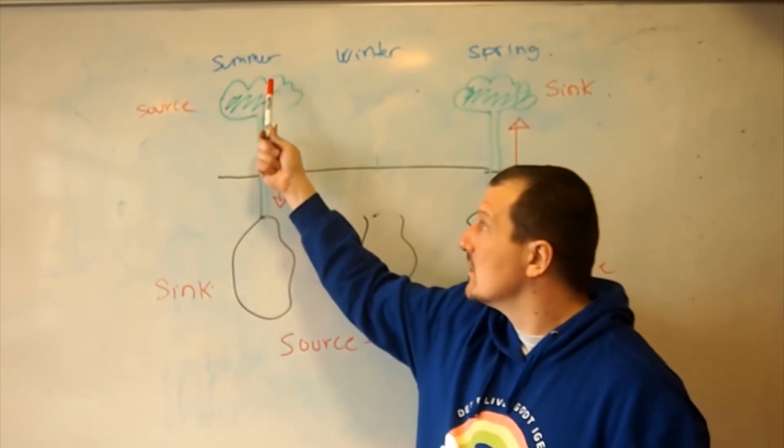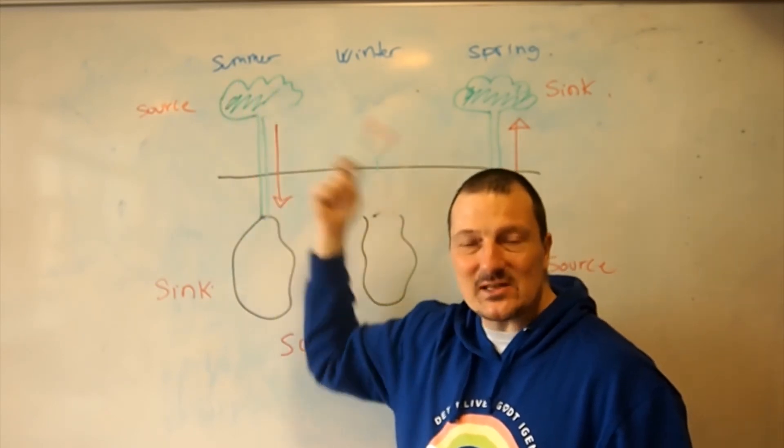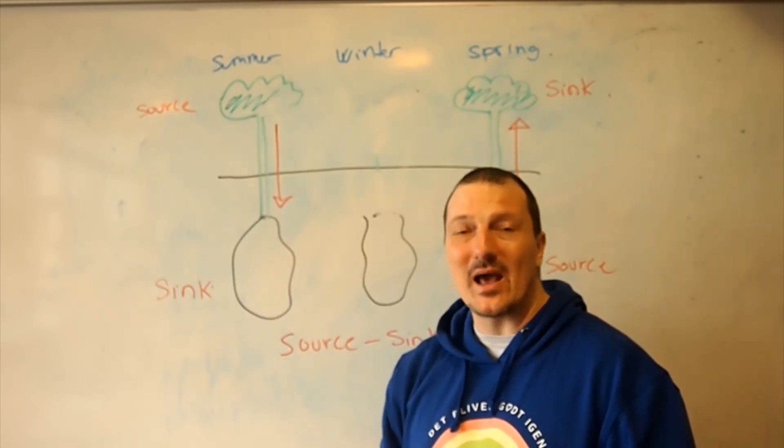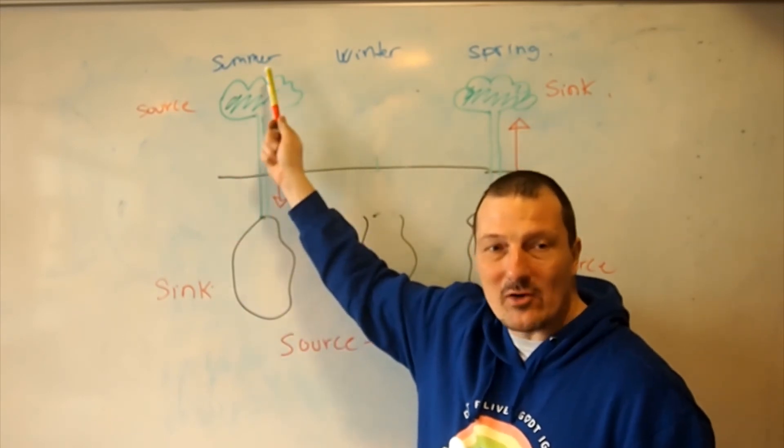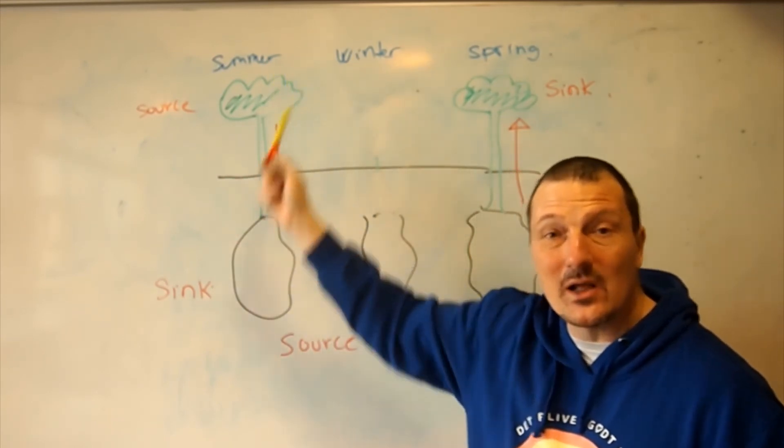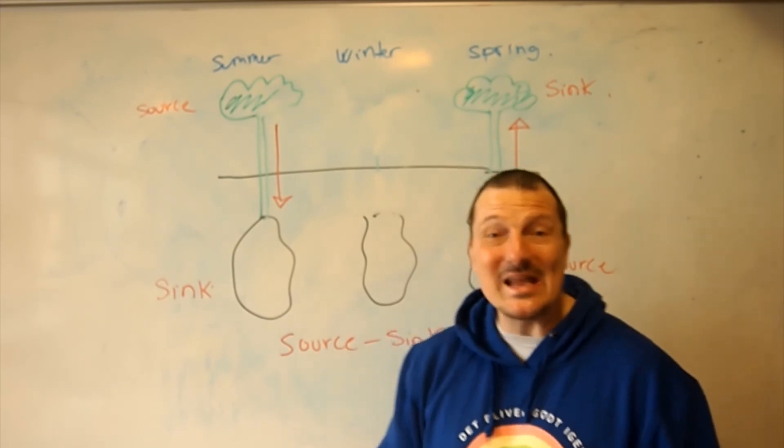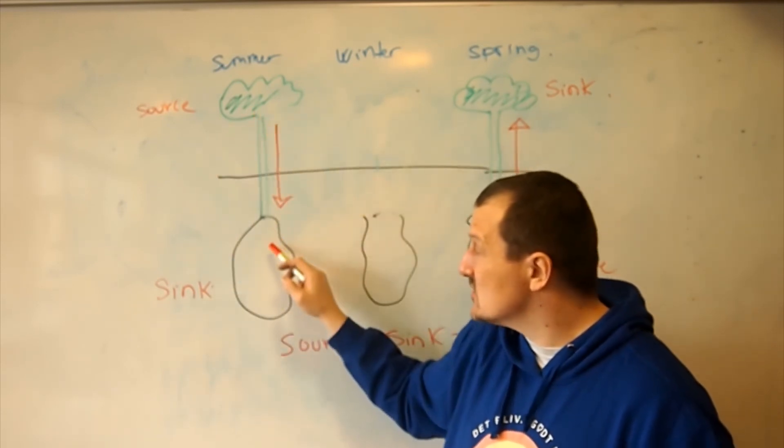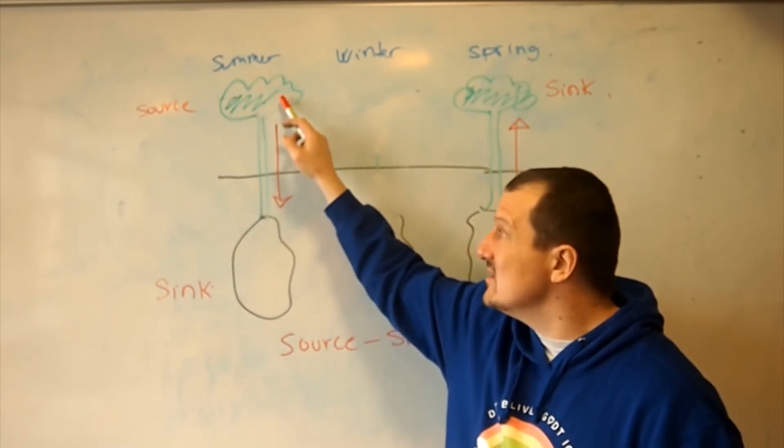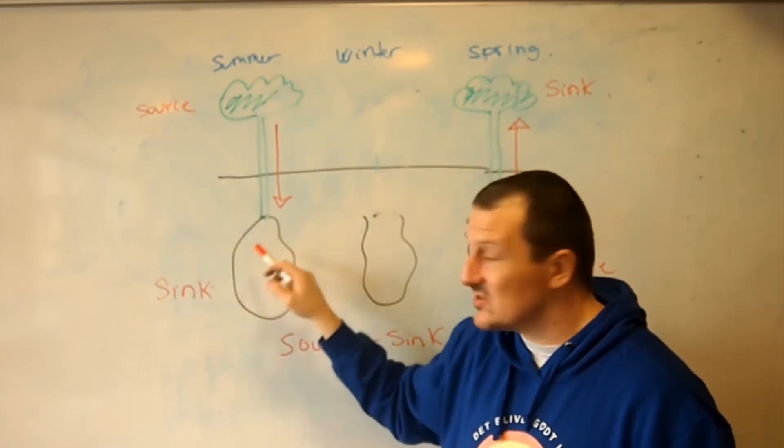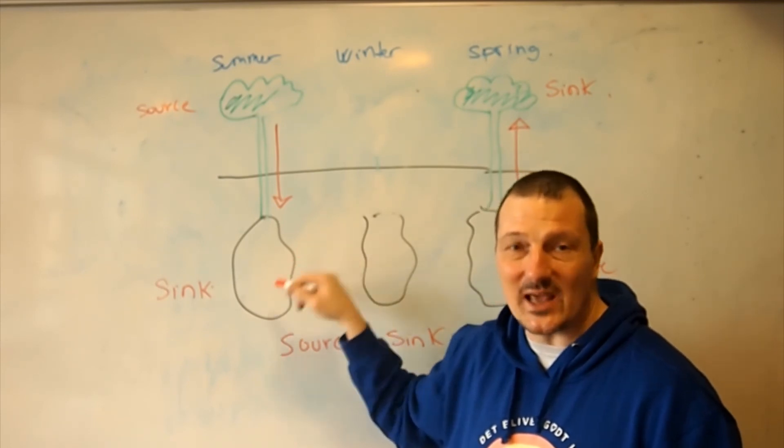During the summer, up here at the leaves, we have photosynthesis happening at a high rate, which means there are produced more carbohydrates, more starch up here, also more amino acids than are needed. So they get stored down here in the potato, which means here during the summer the leaf is the source and the tissue here underground is the sink.